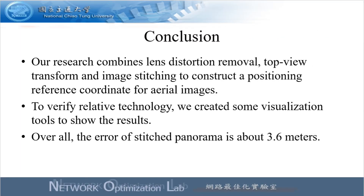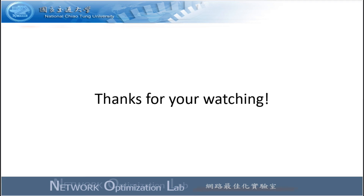In conclusion, our research combines lens distortion removal, top view transform, and image stitching to construct a positioning reference coordinate for aerial images. This provides a way to measure distance and determine the relative position between objects across various images. We also implemented visualization programs to present our results. Through experiments, the average error in our global coordinate is about 3.6 meters. Thanks for watching.